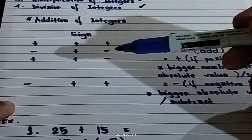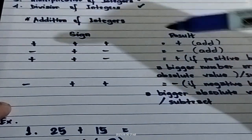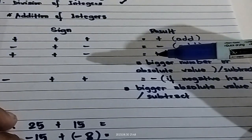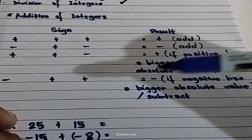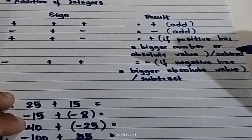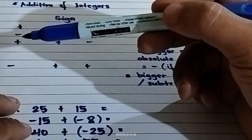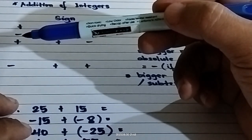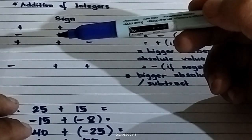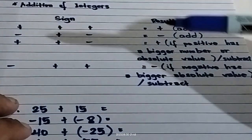What if, for the third case, there is a positive integer and you're going to add a negative integer? The answer will become positive if the positive has a bigger number or absolute value. The operation will become subtraction — you're going to subtract the two integers. For unlike signs, you subtract and copy the sign of the integer that has the bigger absolute value.